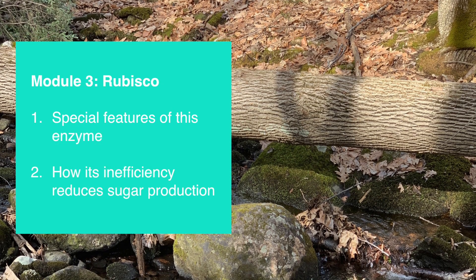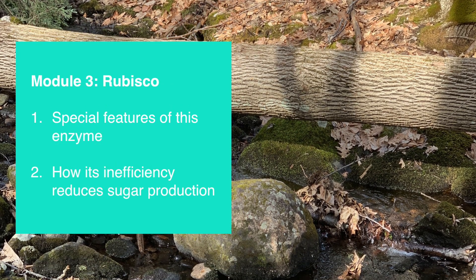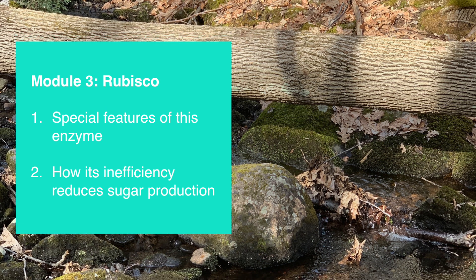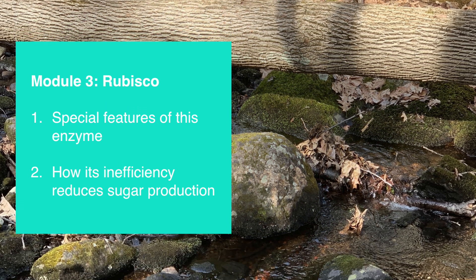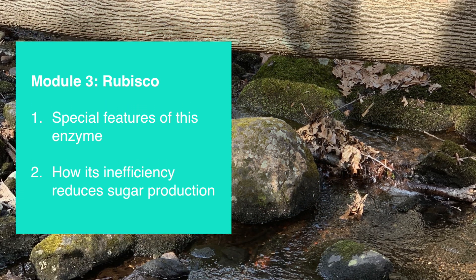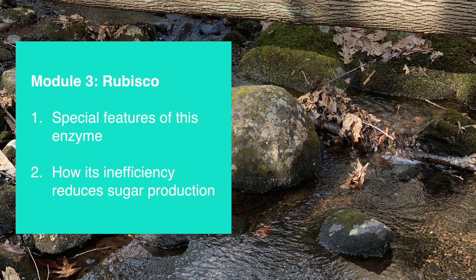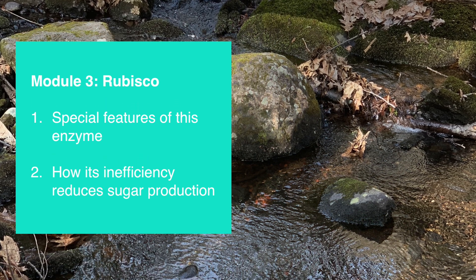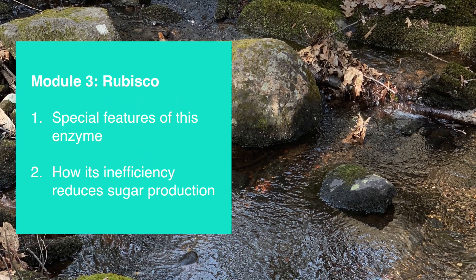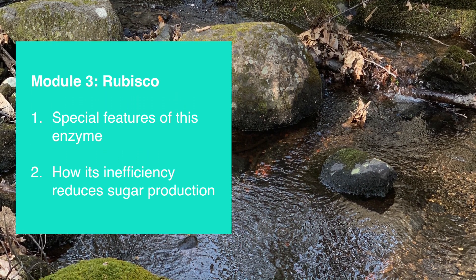Hi everyone, today we're going to be talking about rubisco. We'll talk about all the unique features of this very abundant enzyme, and then we'll talk about how it can lead to an overall decrease in sugar production in the Calvin cycle.